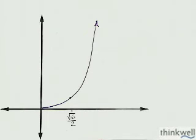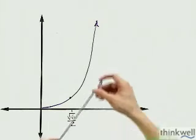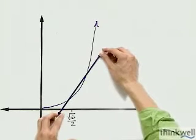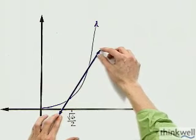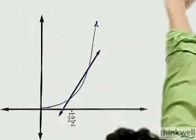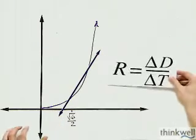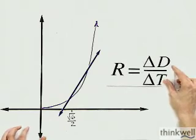The way we warmed up to that was first by saying, well, what I should do is take a look at two points. And between those two points, I can find the average velocity using, of course, the fact that rate equals distance, a change in distance over change in time.